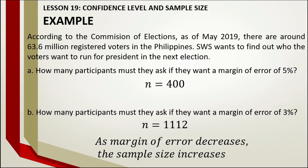So, as you can see, as the margin of error decreases, the sample size increases. Why? Because the survey needs to be more accurate. You might ask: why not just survey all 63.6 million registered voters? Because gathering that much information is difficult and time-consuming. Also, having a margin of error does not mean the result is exact — it just means the estimate falls within that range. For Slovin's formula: as the margin of error decreases, the sample size increases.